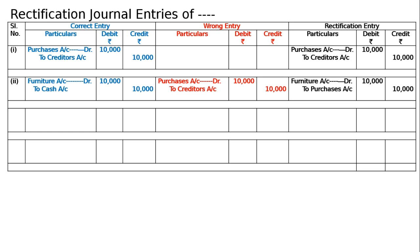The third error: office rent of 15,000 was debited to the personal account of the landlord. The correct entry was rent account debited to cash account 15,000. When we paid the rent we should have debited rent account, but instead we wrote the person taking the money — landlord account debited to cash account. It is the landlord's personal account.